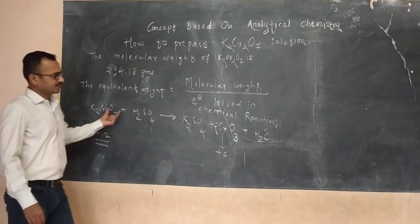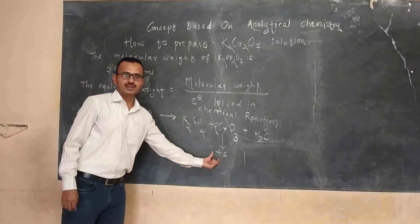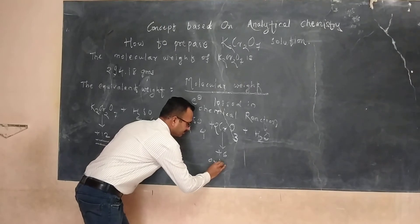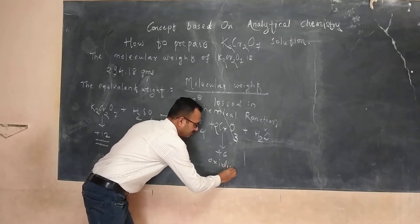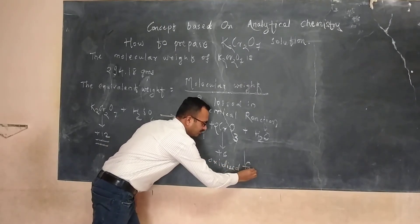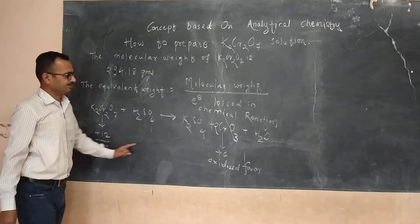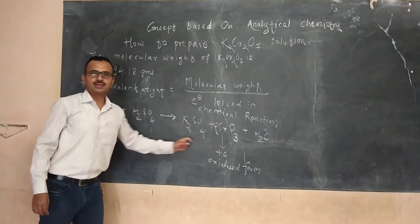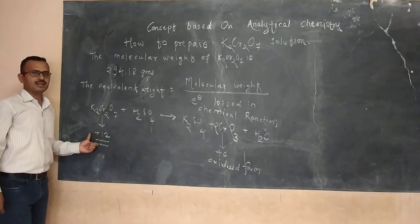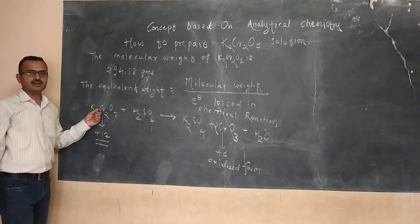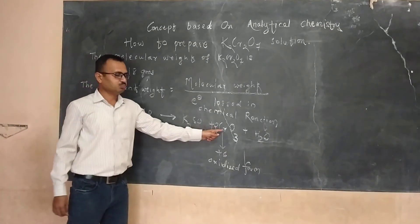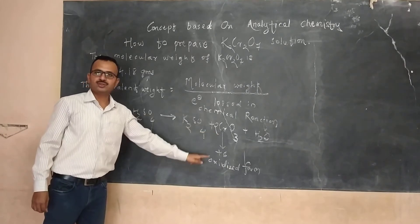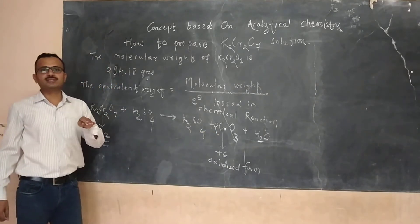So plus 12 is converted into plus 6. So that is oxidized form. So there is total loss of electrons. Plus 12, that is electron rich species. These are electron poor species. Electrons will be lost from here to here. So plus 6 is the difference.